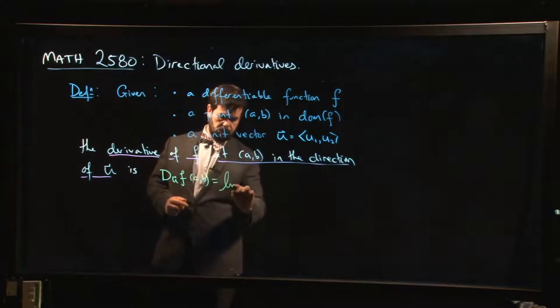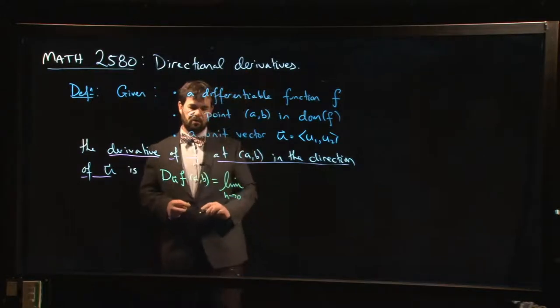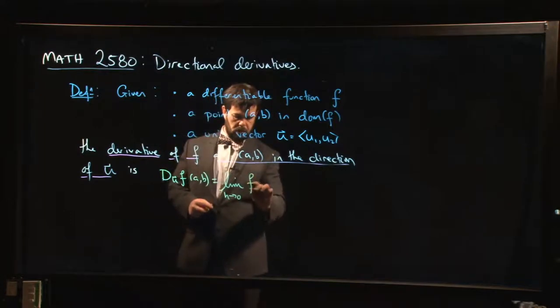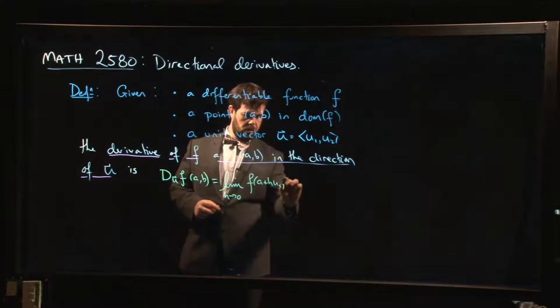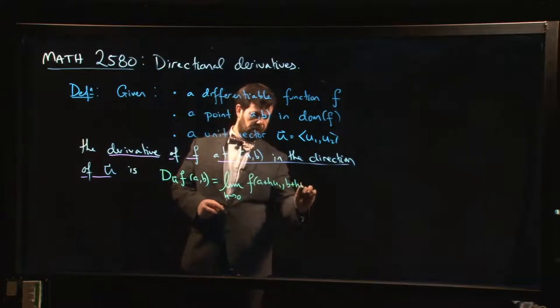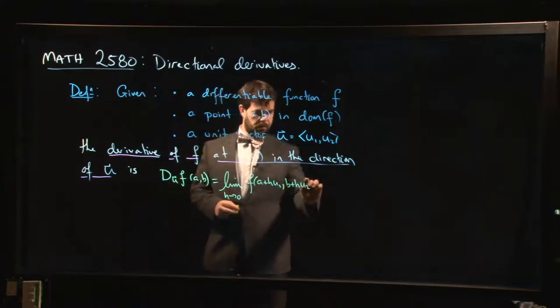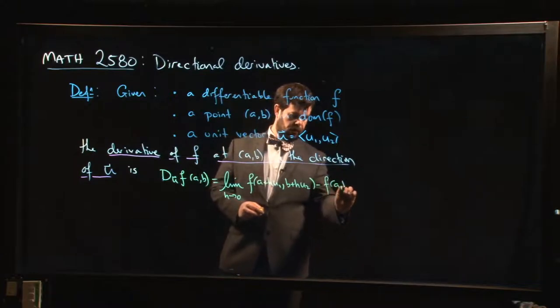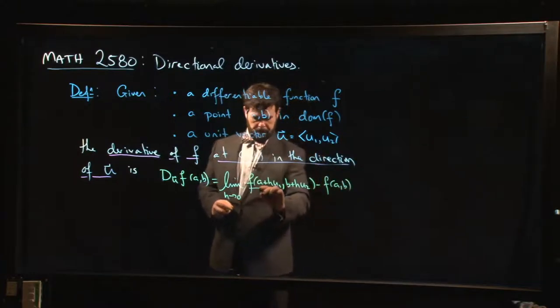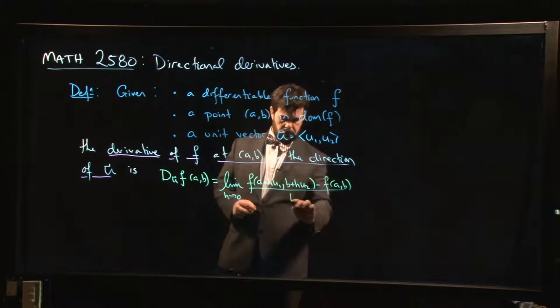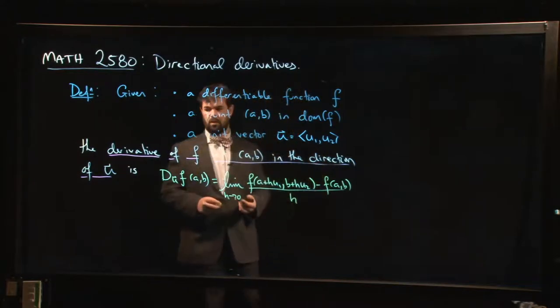It's given by the following formula. It's the limit as h goes to zero: f(a + h·u1, b + h·u2) minus f(a, b), over h.